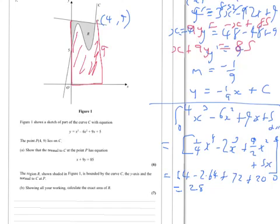We know that length is 9. That length is 4. So it's just a case of finding what this length here is. And we know that the normal, which is this line here, has the equation that we found here. So we're trying to find what value of y is when x is 0. Well, it's 85 over 9.